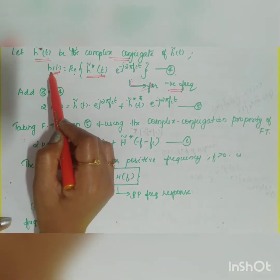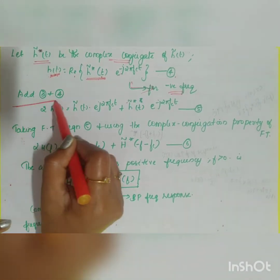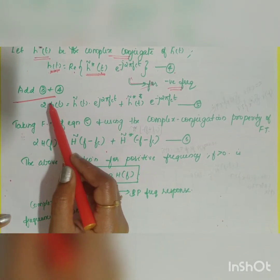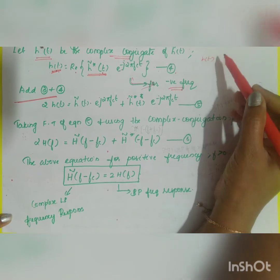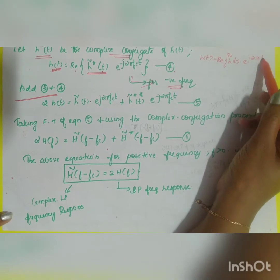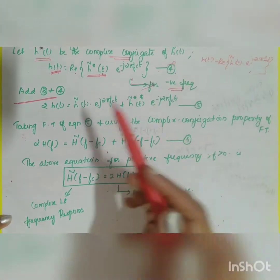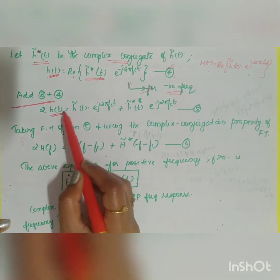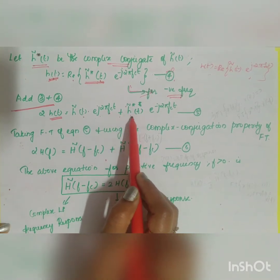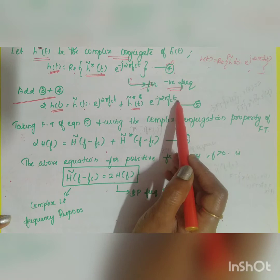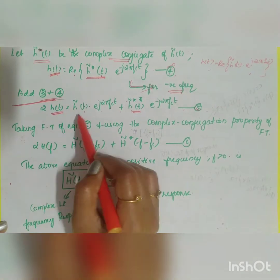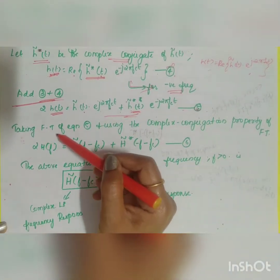Both Equation 3 and Equation 4 have h(t) on the left-hand side. Adding them together gives: 2h(t) = h̃(t)·e^(j2πfct) + h̃*(t)·e^(−j2πfct). Let us take this as Equation 5.